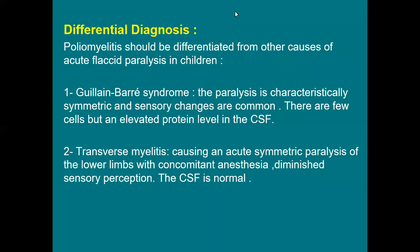The differential diagnosis of acute flaccid paralysis includes several conditions. Guillain-Barré syndrome is a peripheral neuropathy where the paralysis is characteristically symmetric and bilateral, involving both limbs, unlike polio which is asymmetric. There are also sensory changes in Guillain-Barré, whereas in poliomyelitis sensation is intact. In CSF, Guillain-Barré shows elevated protein, while in poliomyelitis protein is normal or only slightly elevated.